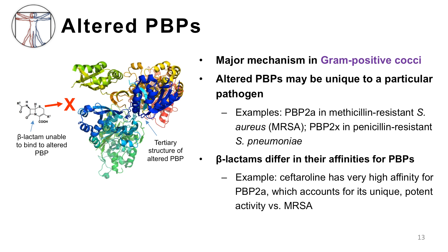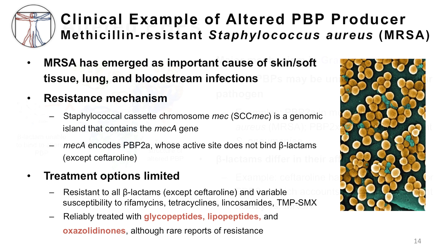MRSA, or methicillin-resistant Staphylococcus aureus, is a great example of the altered PBP resistance type. MRSA has emerged as an important cause of skin and soft tissue infections, pneumonia, and bloodstream infections. With regard to its resistance mechanism, staphylococcal cassette chromosome mec, or SCC-mec, is a genomic island containing the mecA gene. MecA encodes PBP2A, the altered PBP target for beta-lactam antibiotics, rendering them useless except for ceftaroline. This pathogen will be an important focus when discussing cell membrane active compounds such as the glycopeptides, lipoglycopeptides, and lipopeptides.